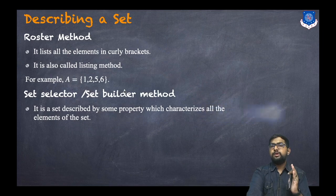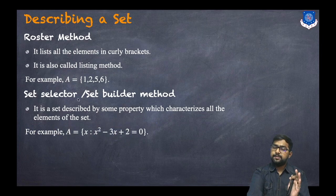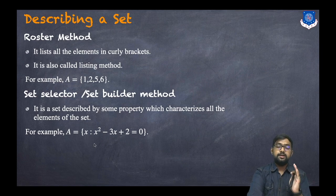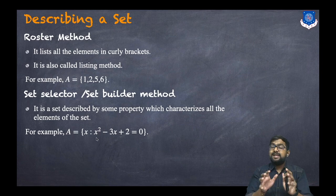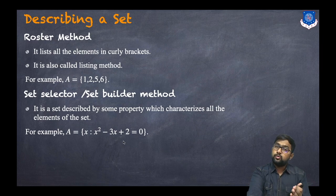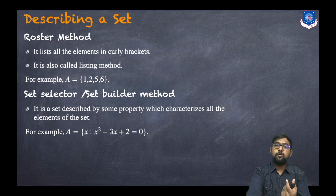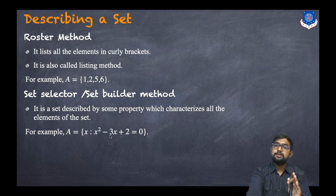The second method is the set builder or set selector method. A set is described by some property which characterizes all its elements. For example, A = {x : x² - 3x + 2 = 0}. This means the set of all x such that x satisfies this quadratic equation. The roots are 1 and 2, so in roster form the answer is {1, 2}.